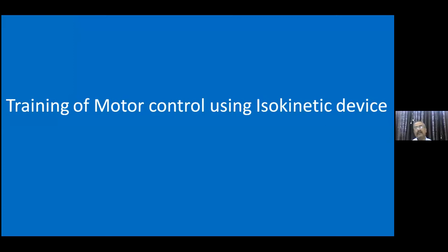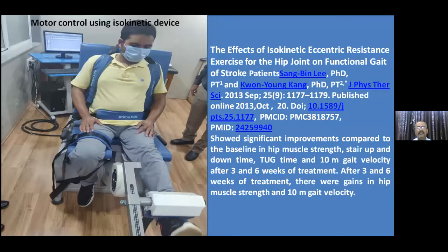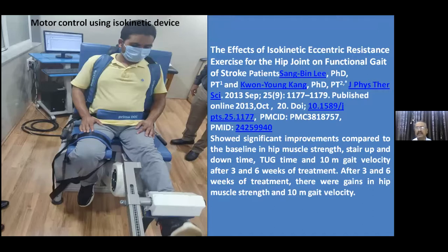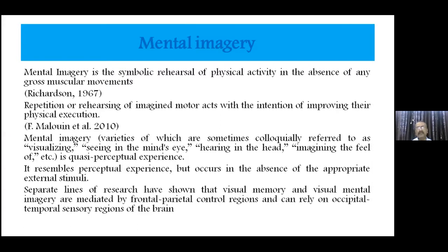Problems in neuro are concerned with motor control. To develop motor control, you can train the patient through exercises or use isokinetic devices. If the patient has issues with knee control, hip control, or internal control, you can recommend isokinetic devices. For patients with very severe spasticity, do not use this system — it is only for patients with functional spasticity. Several studies on eccentric resistance training for the hip joint in stroke patients showed very good improvement in outcome measures.